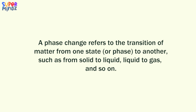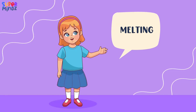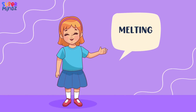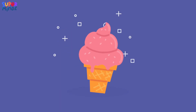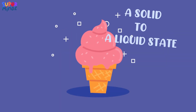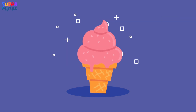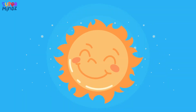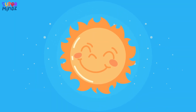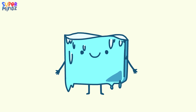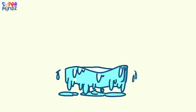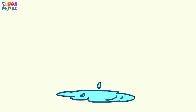Melting is the phase change from a solid to a liquid state, typically due to an increase in temperature. For example, when you apply heat to ice, it melts into liquid water.